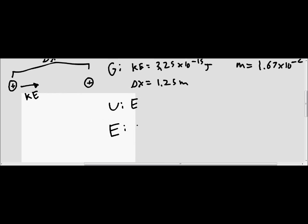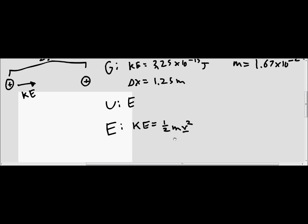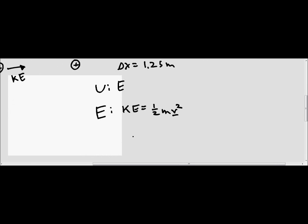For starters, we know that the kinetic energy is equal to one half mv squared, and we're trying to get that velocity. So if we multiply and divide to isolate the velocity, we've got two times kinetic energy over the mass, and if we square root that we're left with just the velocity.